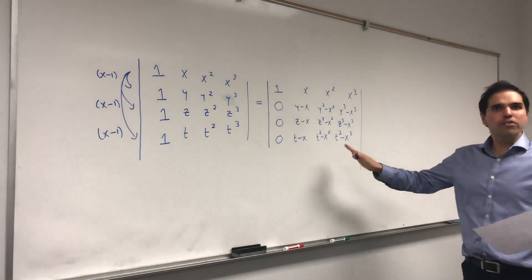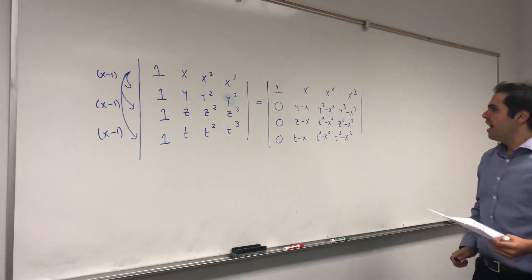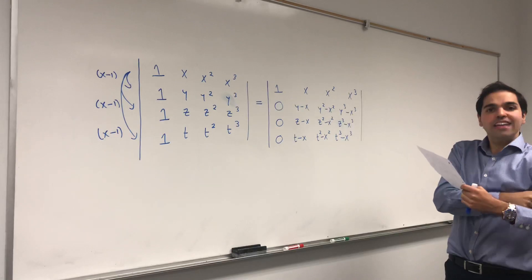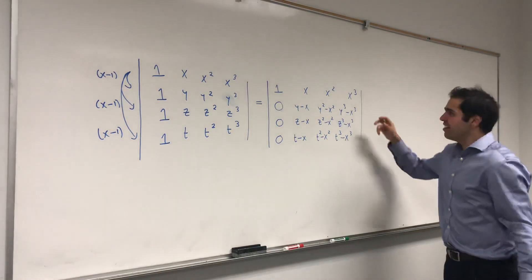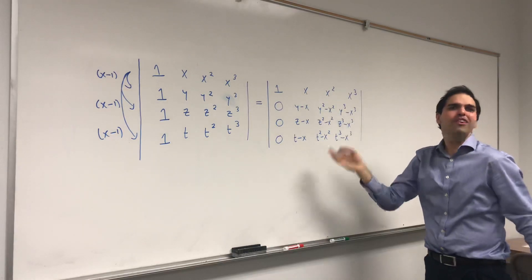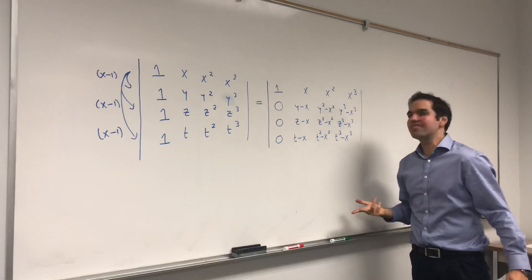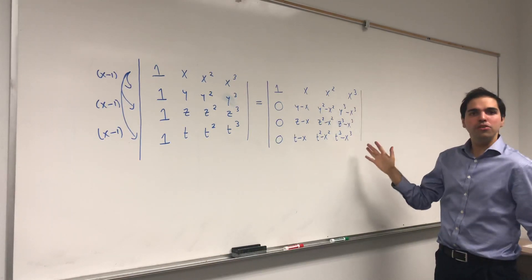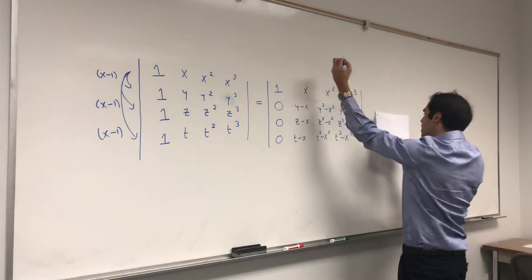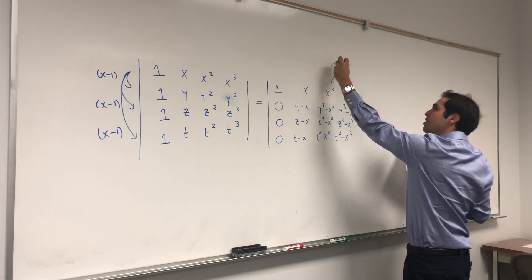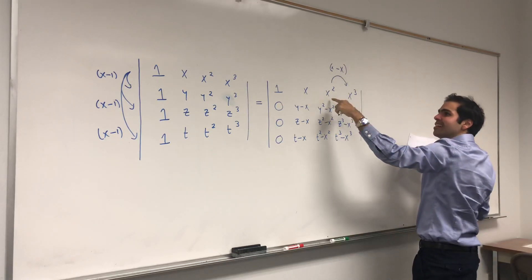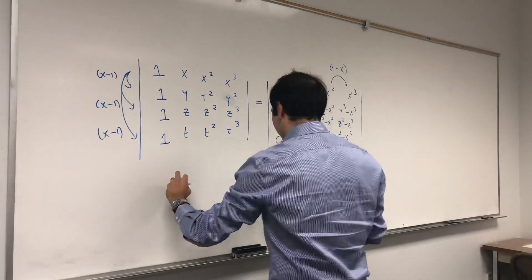That was the row reduction from the previous video. Previously we noted common factors like y−x, but now we want to do something different. Instead of row reducing further, we would like to column reduce this matrix first. It turns out column reduction follows the same rules as row reduction and most of the time does not affect the determinant. In particular, we would like to subtract −x times the third column from the fourth column.